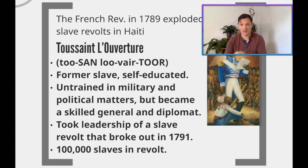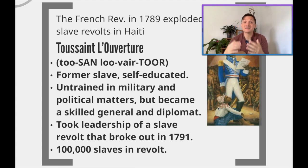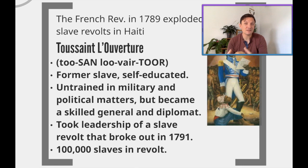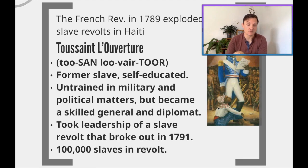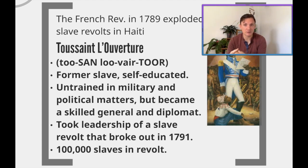Toussaint L'Ouverture was a former slave himself. We believe in the historical community that he was more than likely educated by family members who were gens de couleur, or free people of color, because a lot of the free people of color were educated, literate, and self-sustaining. He became highly educated, speaks fluent French, speaks fluent Spanish, and became very involved in the political goings-on of the island.